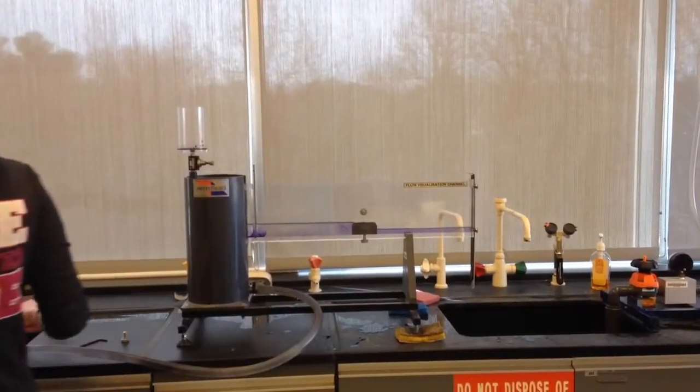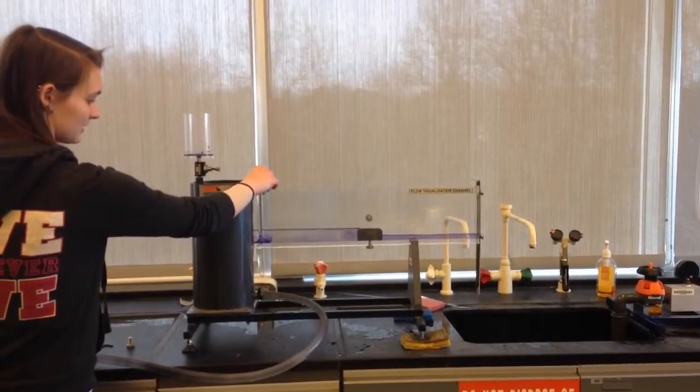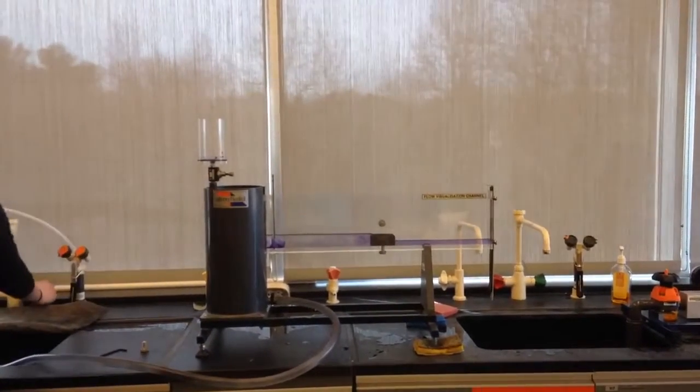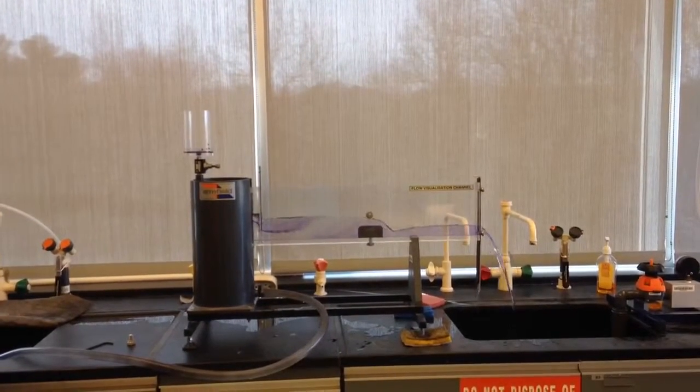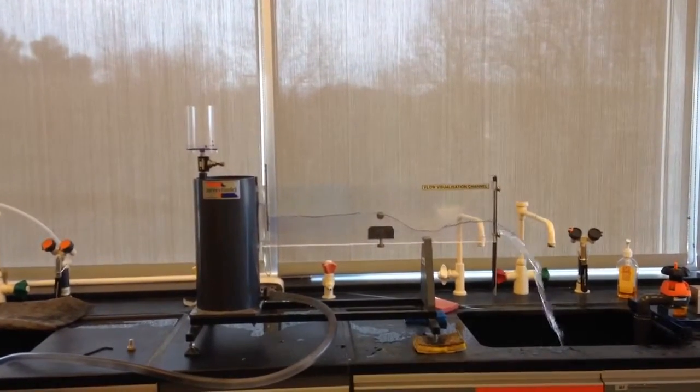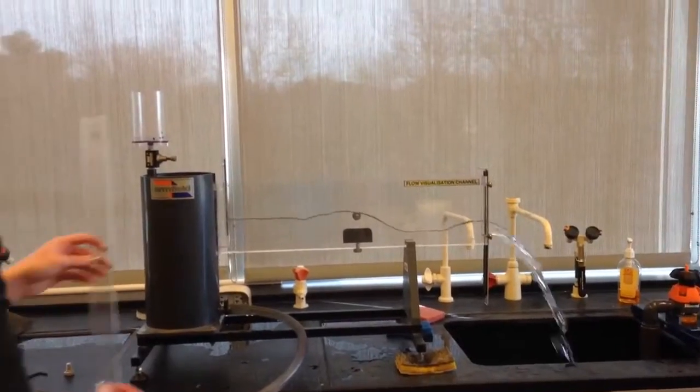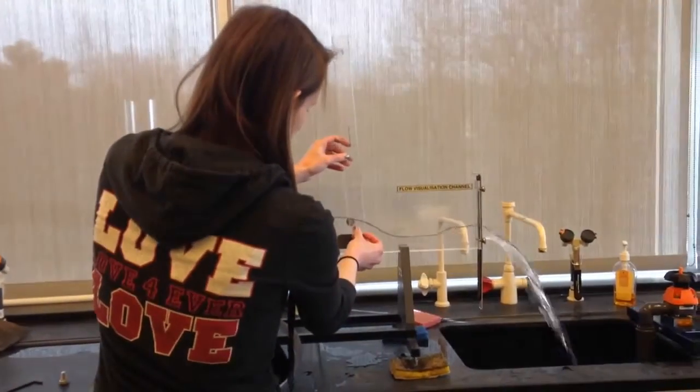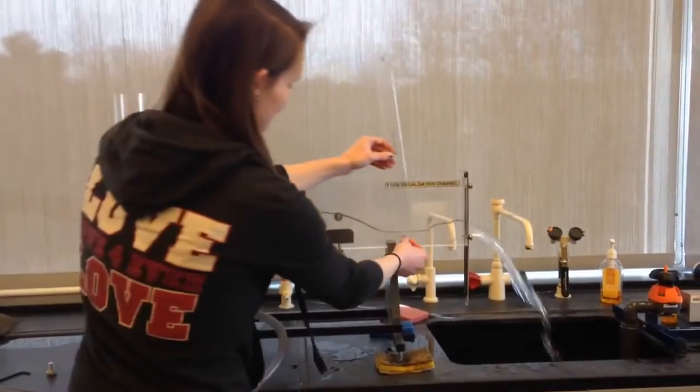Change the height of the overshot weir until a hydraulic jump occurs near the weir. Measure the height of the water above the weir. Measure the depth of the water before and after the jump downstream of the weir.